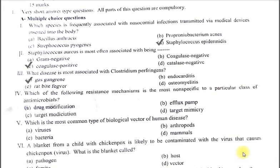Which of the following resistance mechanisms is the most non-specific to a particular class of antimicrobials? A. Drug modification. B. Efflux pumps. C. Target modification. D. Target mimicry. The correct option is B, efflux pumps. Efflux pumps are used to throw out the antibiotic which is trying to enter into the bacterial cell.